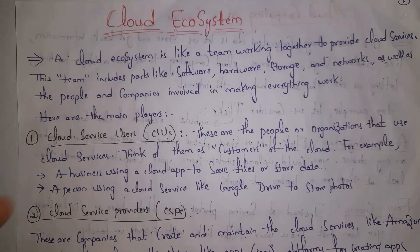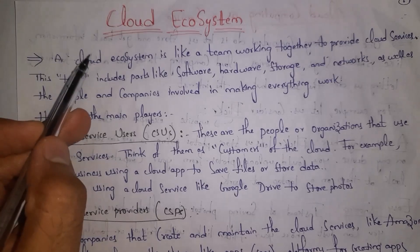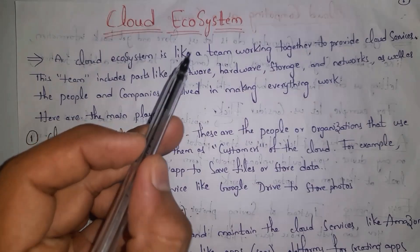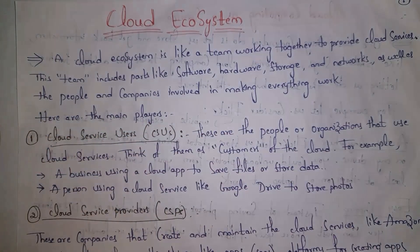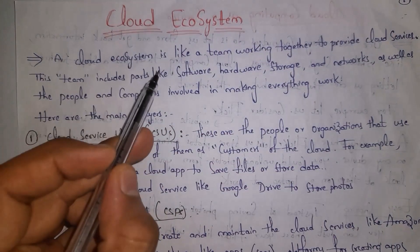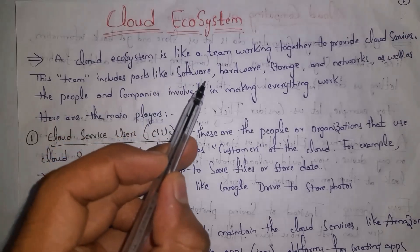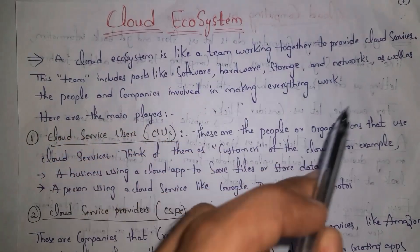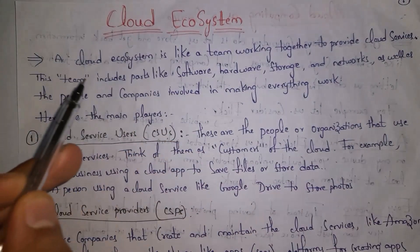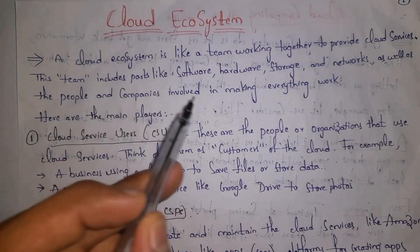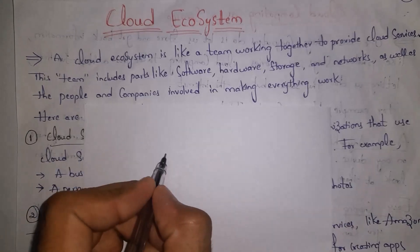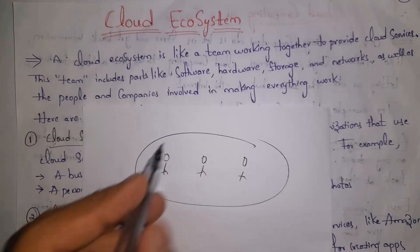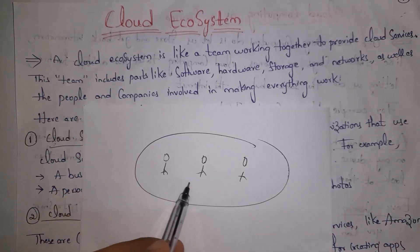Next, I will explain what a cloud ecosystem is. A cloud ecosystem is like a team working together to provide cloud services. This team includes parts like software, hardware, storage, and networks, as well as the people and companies involved in making everything work.